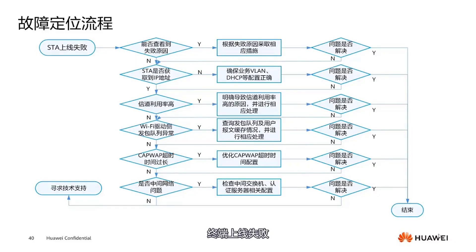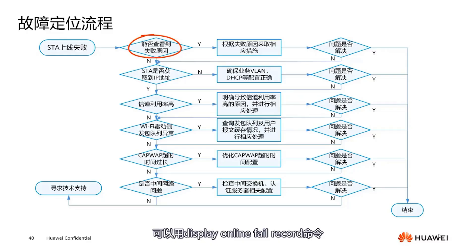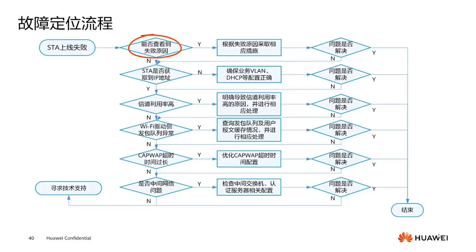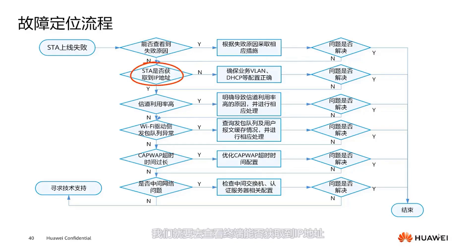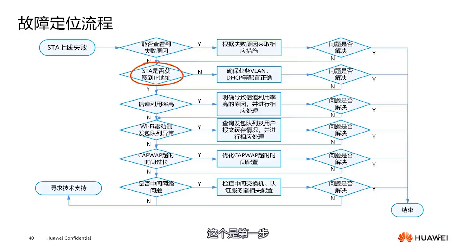When a terminal has failed to come online, first check if the failure reason can be identified using the command 'display online fail record.' If there is a reason, it's simple — we can take action based on the identified reason. If the reason is not visible, we need to check if the terminal can obtain an IP address, which is the first step.